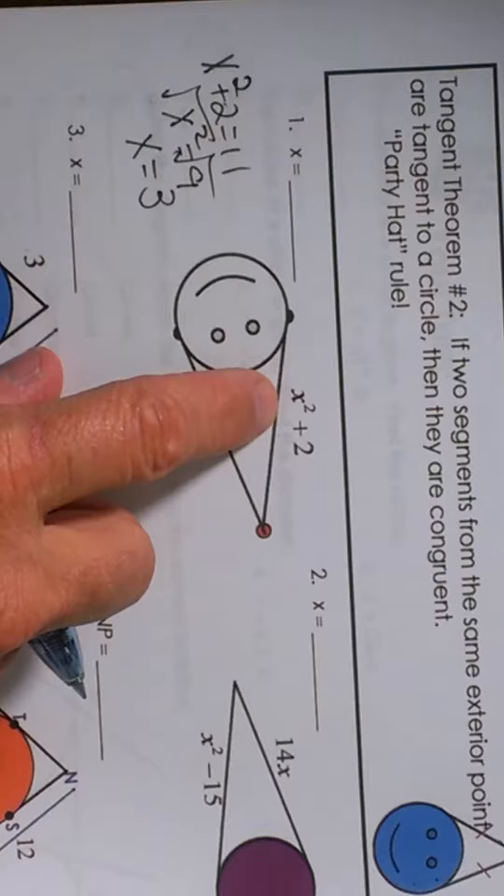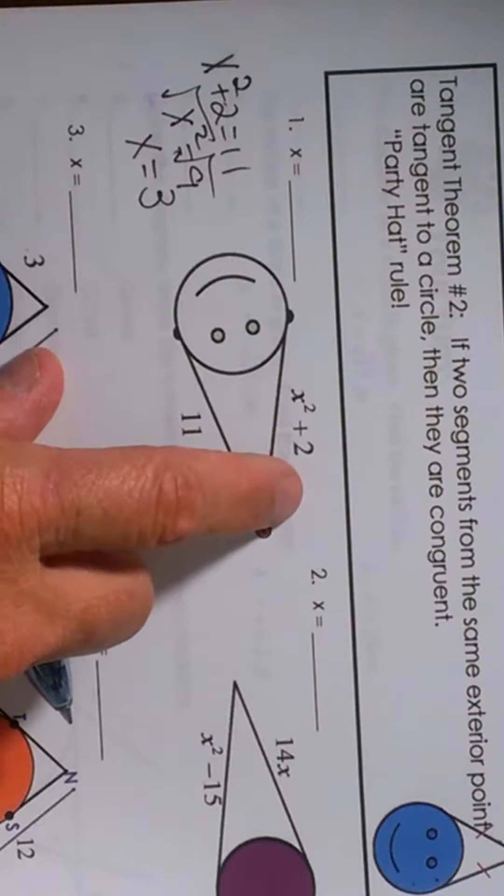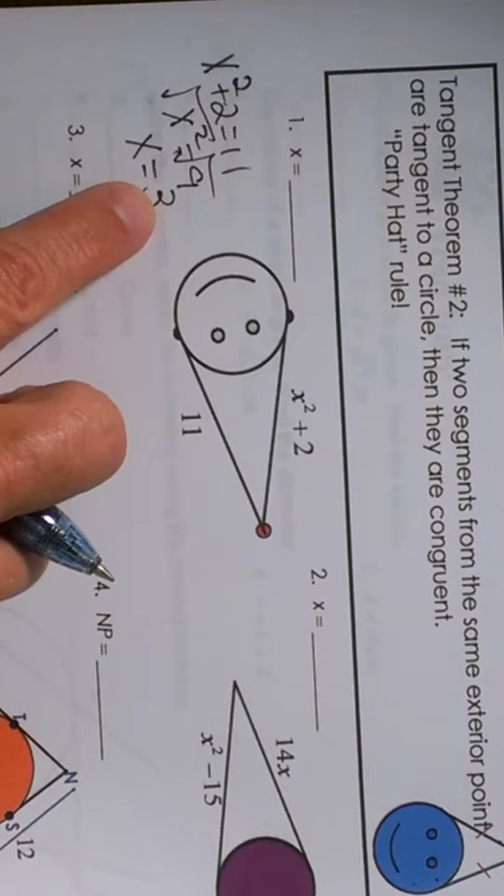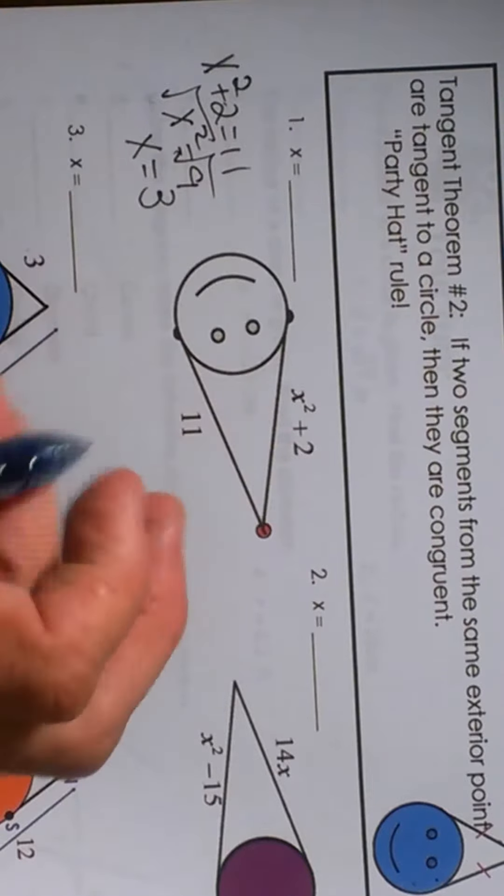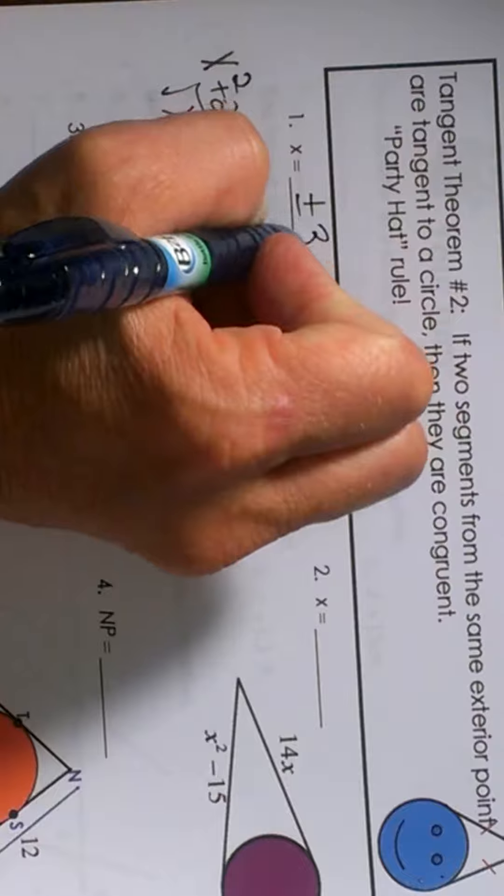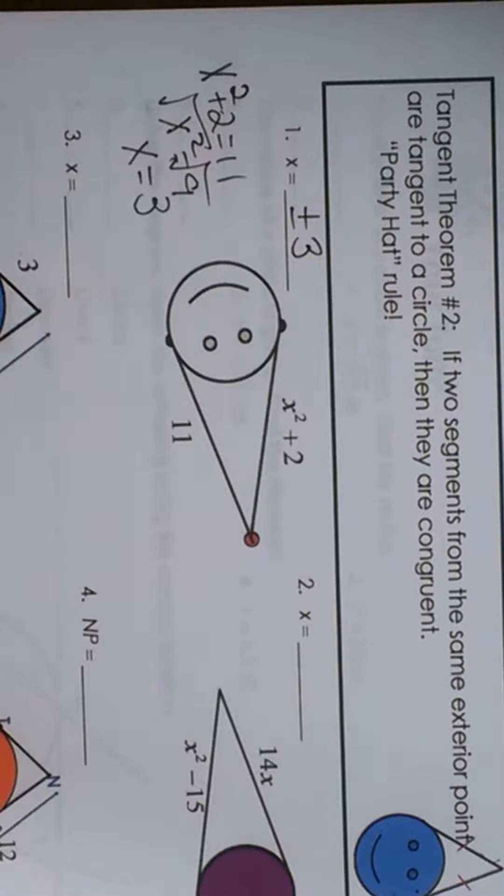So let's look. Can we plug a positive in there? Yes, because 3 squared is 9 plus 2 is 11. Can we plug a negative 3 in there and still get a positive answer? We can. So this ends up being both a positive and a negative 3 possible answers.